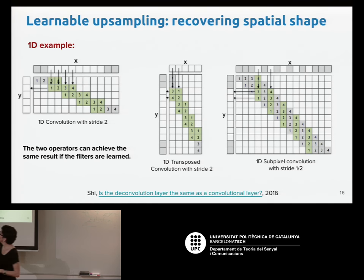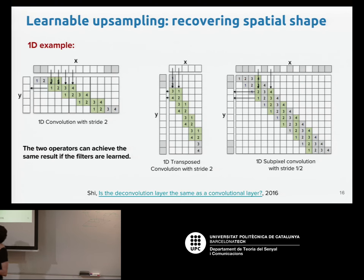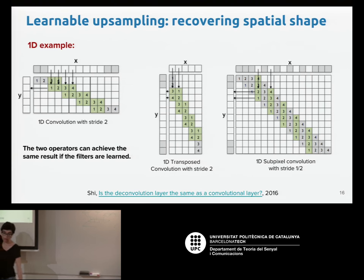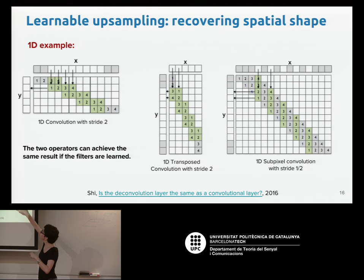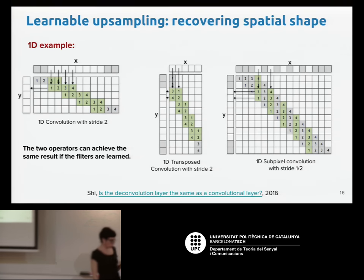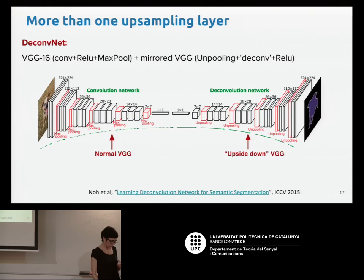Here is a simple 1D example showing these two operations are equivalent. A 1D convolution with stride 2 downsamples input x into output y. The upsampling using a transposed matrix goes from the small signal x to the larger y. The same operation can be performed with a usual convolution with stride 1/2 by adding zeros between samples. The operations do the same thing — perhaps with weights in a different order — but since the weights are learned, the two are equivalent. In the Long net, this upsampling is done at the end with the predictions.